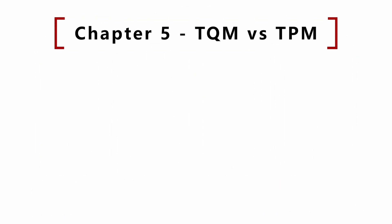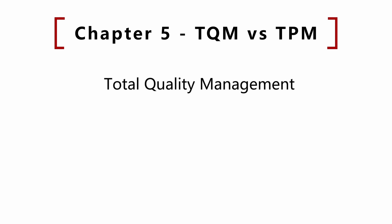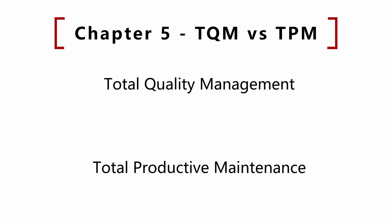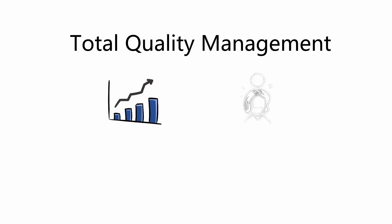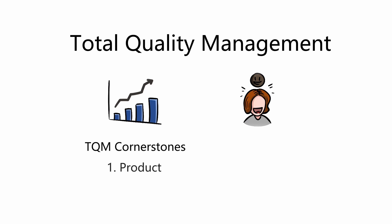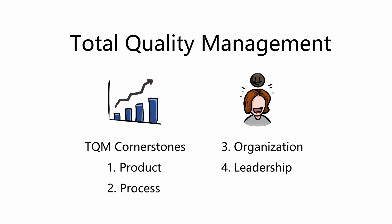Chapter 5: TQM vs TPM. Total Quality Management and Total Productive Maintenance are often used interchangeably; however, they are considered two different approaches in the official literature. TQM attempts to increase the quality of goods, services, and customer satisfaction by raising awareness of quality concerns across the organization. TQM is based on five cornerstones: the product, the process that allows the product to be produced, the organization that provides the proper environment for the process to work, the leadership that guides the organization, and commitment to excellence throughout the organization.